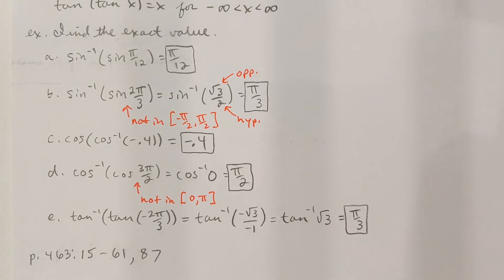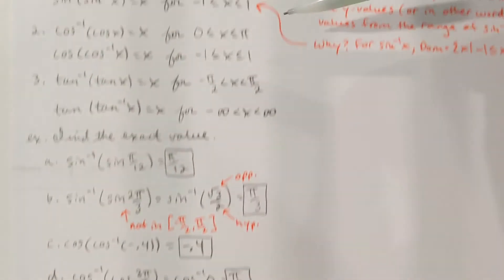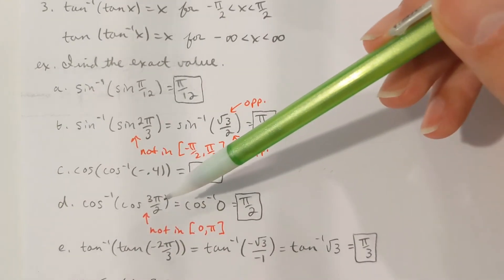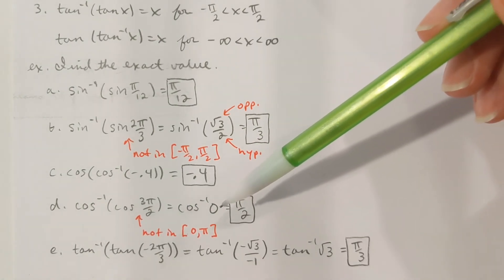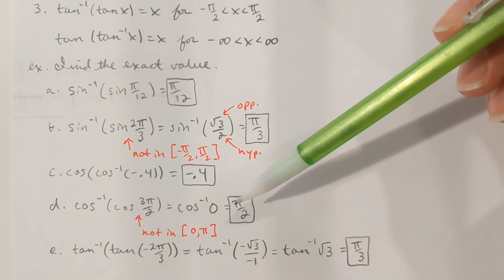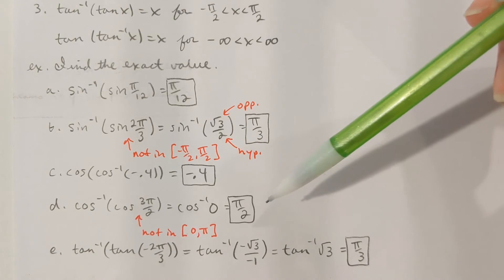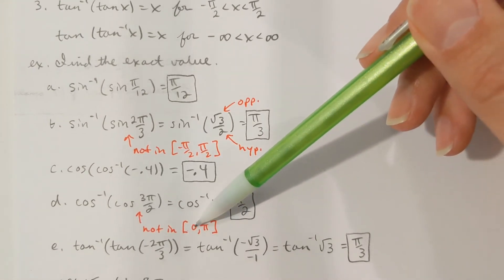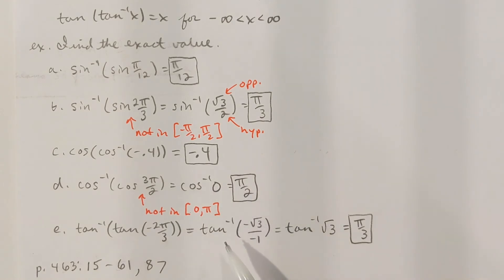Part D: cosine inverse of cosine of three pi over two. Cosine inverse of cosine of x is x, but only if x is between zero and pi. Three pi over two is not between zero and pi, so I wouldn't want to say three pi over two. Cosine of three pi over two is zero, so I just need to find cosine inverse of zero. If I call that y, cosine of y equals zero, and that angle has to be in the interval zero to pi. Cosine of pi over two is zero, so cosine inverse of zero is pi over two.